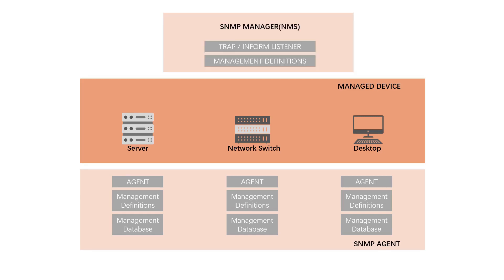SNMP works by sending protocol data units, also known as SNMP get requests, to network devices that respond to SNMP. All these communications are tracked, and network monitoring tools use get requests to fetch data from SNMP.